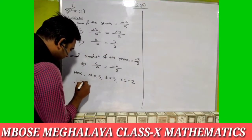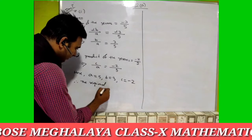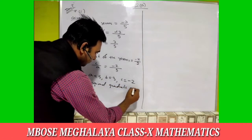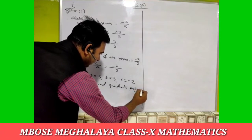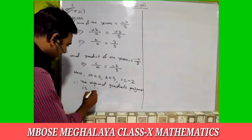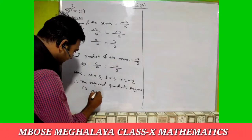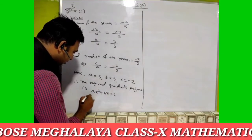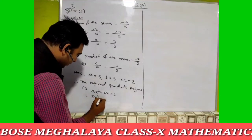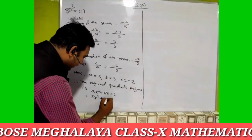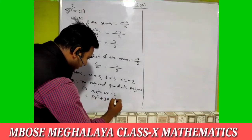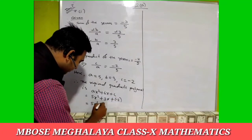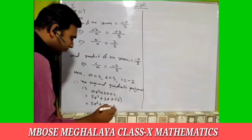Therefore, the required quadratic polynomial is ax squared plus bx plus c. In place of a we write five x squared, in place of b we write three x, and in place of c we write minus two. So the answer is five x squared plus three x minus two.